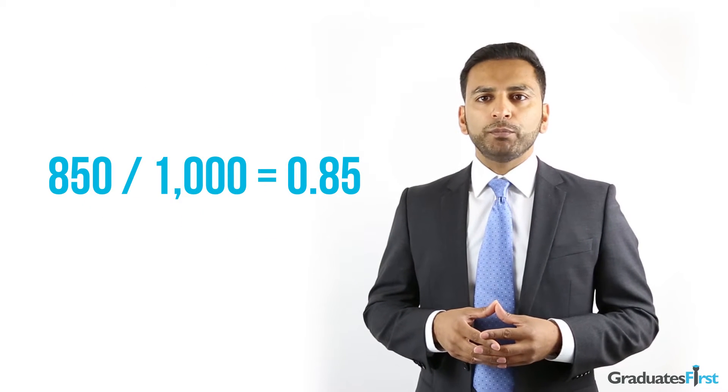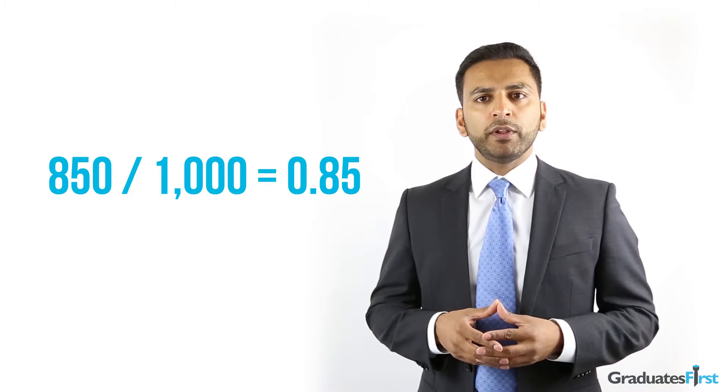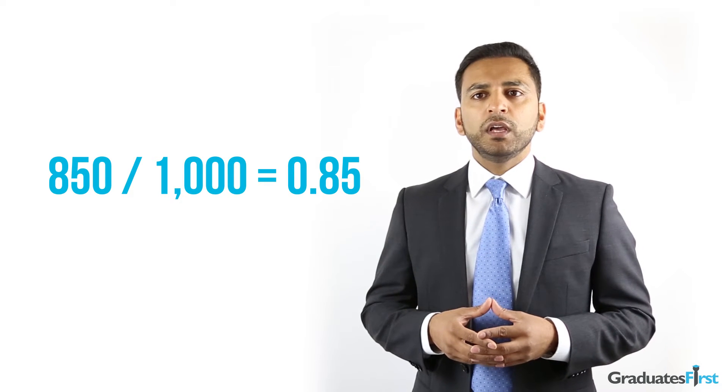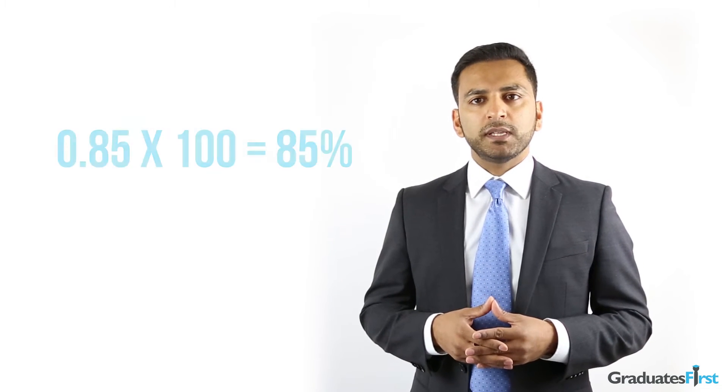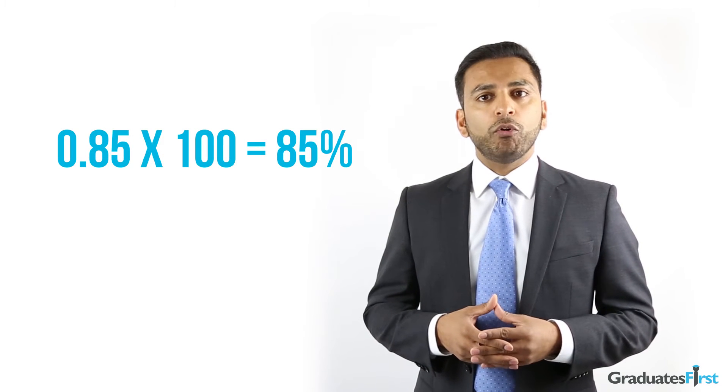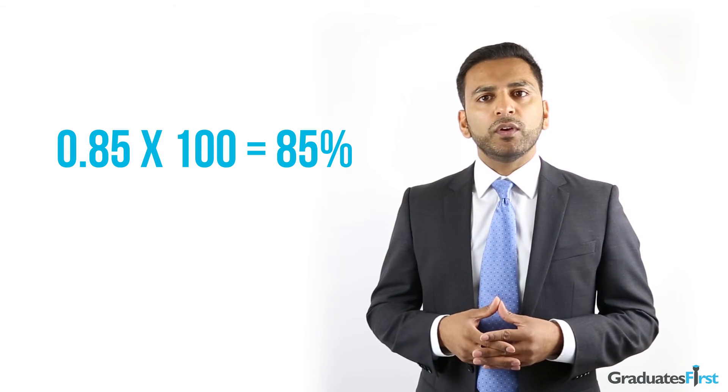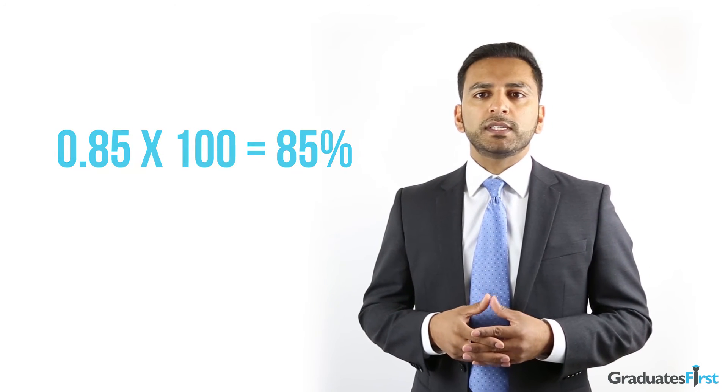Thus, if you divide the number of people responding out of the number of people invited, you will get 0.85. Once you have a decimal value, you simply multiply this by 100 to convert it into a percentage. Thus, 0.85 times 100 equals 85%. You can then conclude that 85% of people responded to the survey that was sent out.